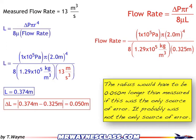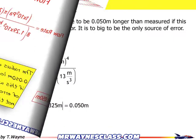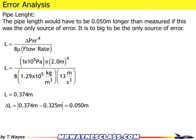So how do you write this up in the lab report? For the error analysis section, you would say that you're looking at the pipe length. And you'd say the pipe length would have to be 0.05 meters longer, so that's my value, if it was the only source of error. It's too big to be the only source of error. So there's no way that I have that kind of error of 5 centimeters, so that's not the only source.